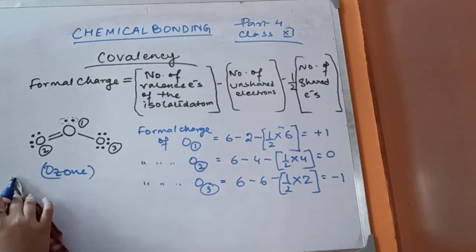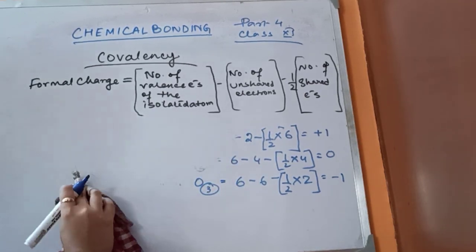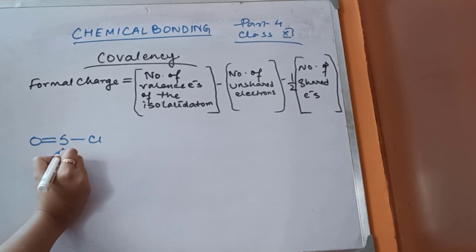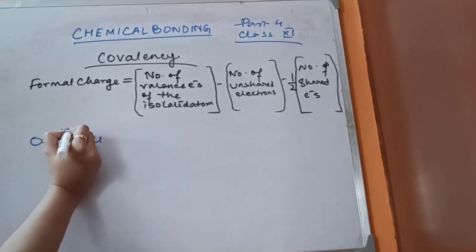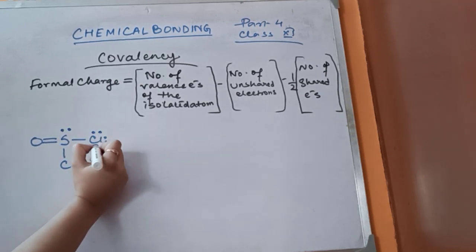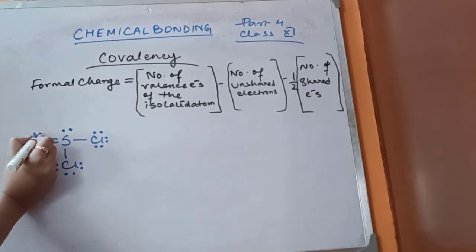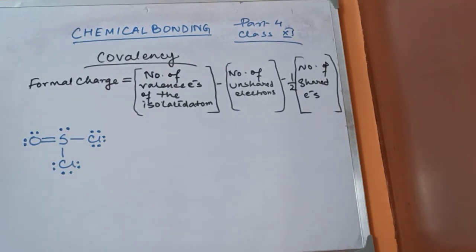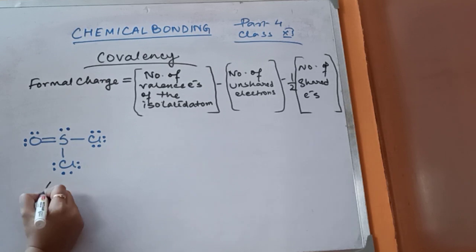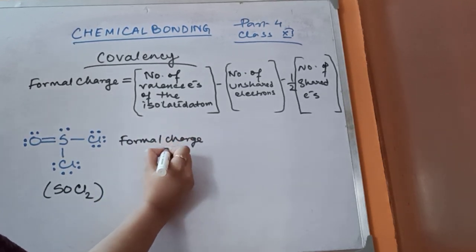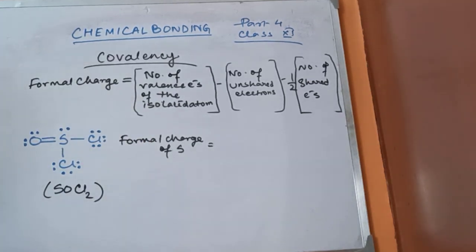The next molecule is sulfuryl chloride, SOCl₂. This is the Lewis structure of SOCl₂. For sulfur — the electronic configuration of sulfur is 2, 8, 6 — so the number of valence electrons is 6. Minus number of unshared electrons: 2. Minus half into number of shared electrons: 8 shared electrons, so half is 4. So: 6 minus 2 minus 4 = 0. The formal charge of sulfur is 0.